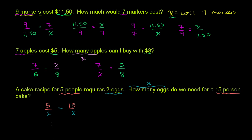Or you could flip both sides. You could say the ratio between five and 15 is going to be equal to the ratio between the number of eggs for five people and the number of eggs for 15 people. And obviously you could flip both sides of this equation. So for all three problems we've set up the proportions that describe each of them, and then you can go later and solve for x to actually get the answer.